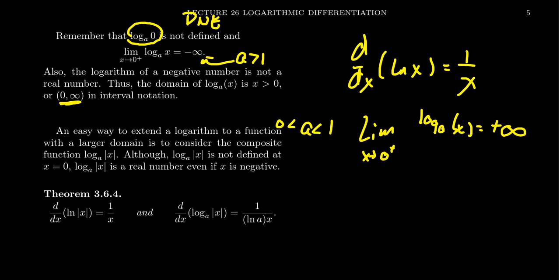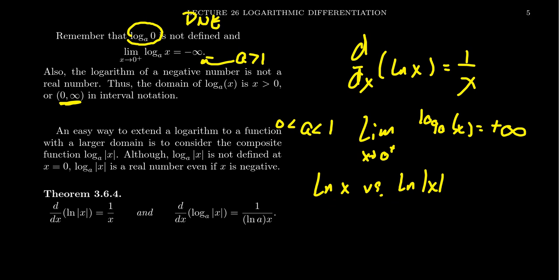What you could do, if we want to extend the domain of the natural log, is instead of using the natural log of x, we could consider the function the natural log of the absolute value of x. By taking the absolute value of the input, if it was negative, we swap it to positive. Then you take the natural log of it normally. So when x is positive, these two functions are one and the same. But when x is negative, the natural log of x is undefined as a real number, while ln|x| gives a mirror image — so we can properly extend the domain.